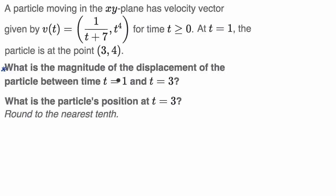If we know Δx and Δy, we add Δx to 3 and Δy to 4 to find the particle's position at t = 3. So, Δx from t = 1 to t = 3 is the integral from 1 to 3 of the x-velocity function, which is 1/(t + 7) dt.